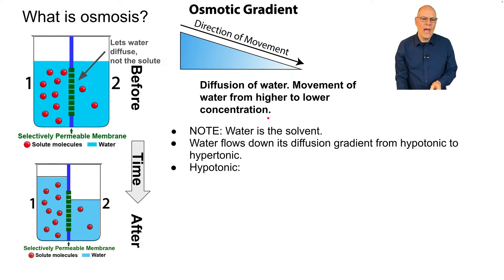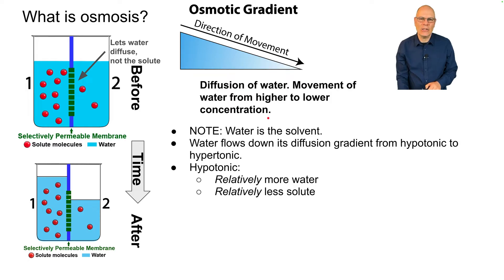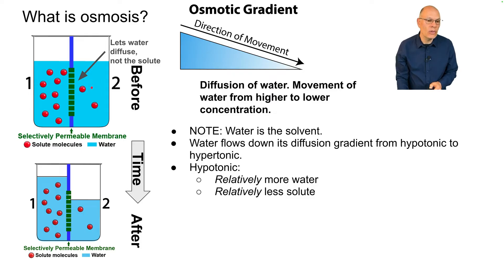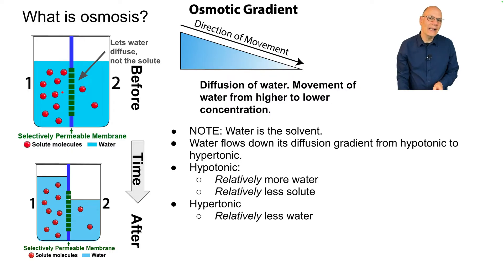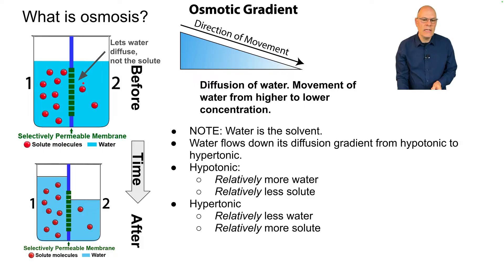Those are essential terms to know. Hypotonic means relatively more water and relatively less solute — these terms are not absolute; they're always relative to another solution. In this diagram, this side is hypotonic: it has a higher percentage of water molecules and a lower percentage of solute molecules. This side is hypertonic, meaning relatively less water and a higher percentage of solute molecules. Water will move down its concentration gradient from this side to that side.